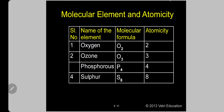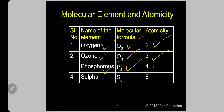Here is a summary table: oxygen O₂, atomicity 2; ozone O₃, atomicity 3; phosphorus P₄, atomicity 4; sulfur S₈, atomicity 8. Kindly memorize — questions will be asked under this.